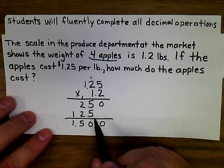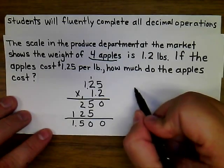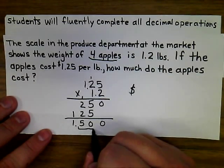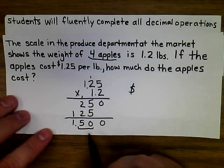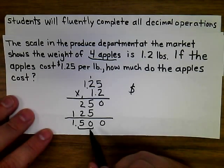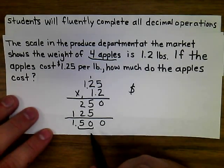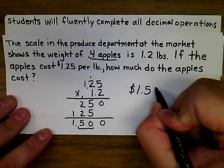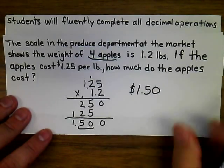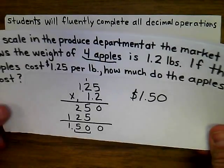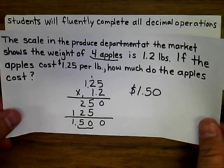Keeping in mind that this involves money, the American currency system only accounts for two decimal places — up to a hundredth of a dollar. So the correct answer is $1.50 for the 1.2 pounds of apples.